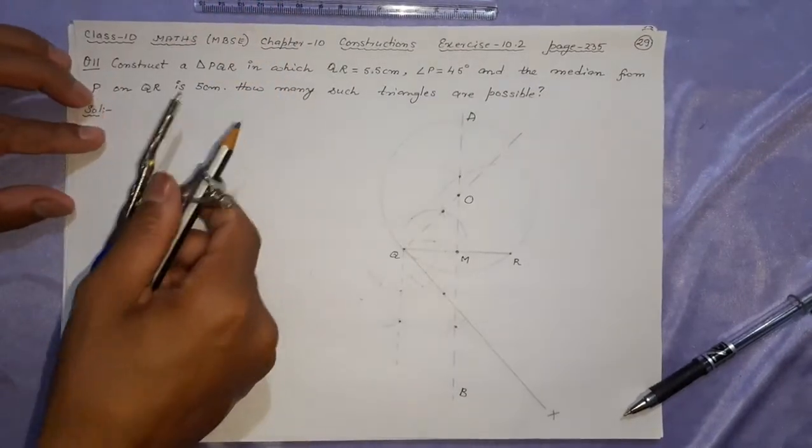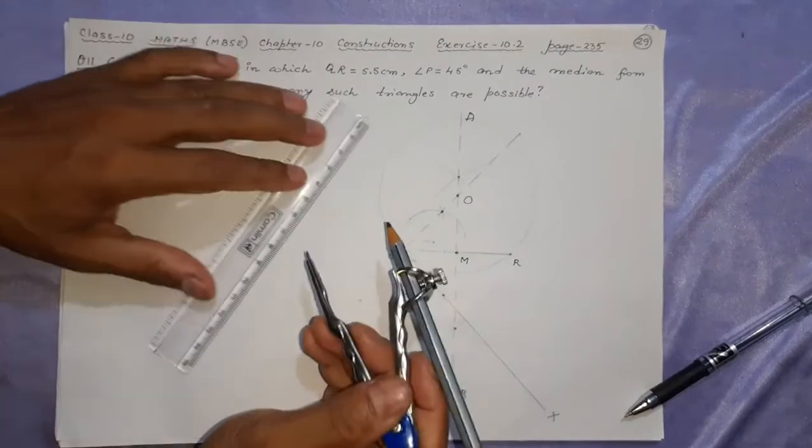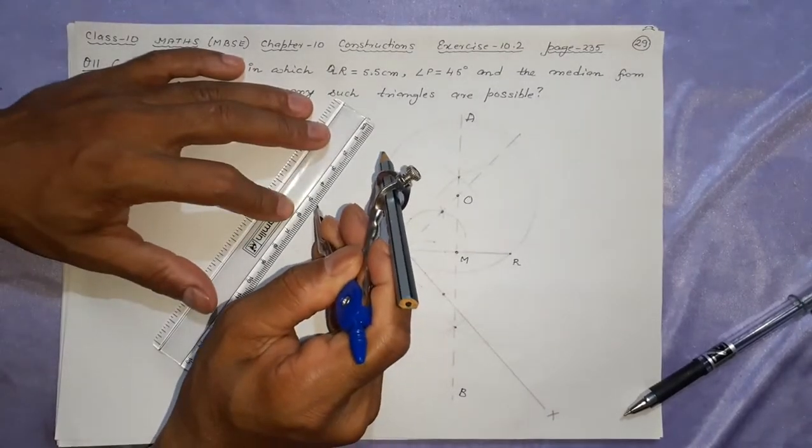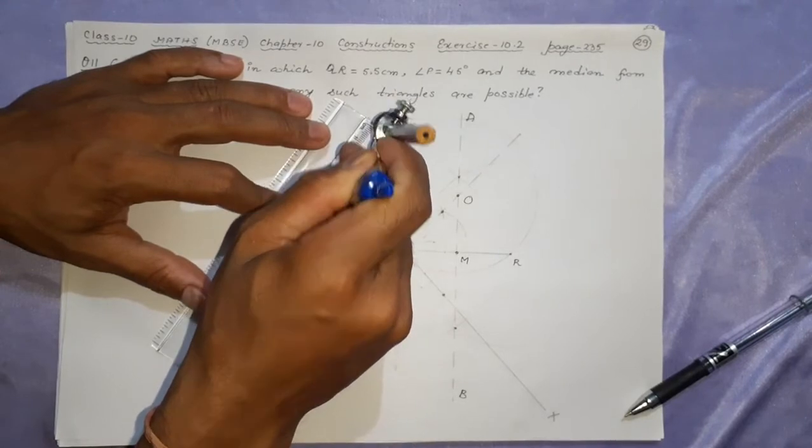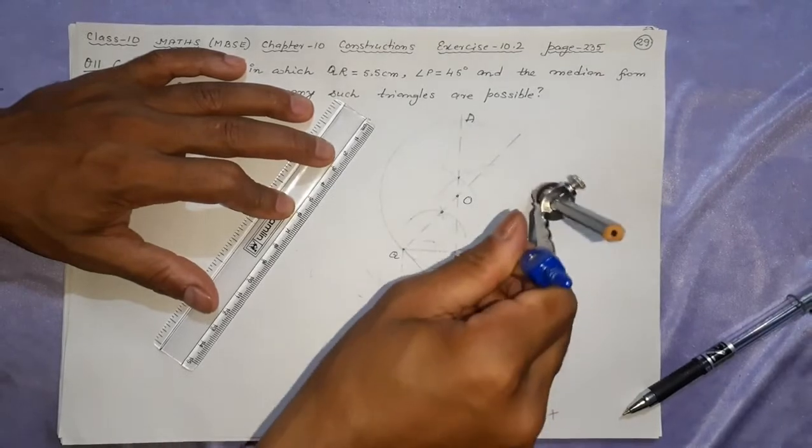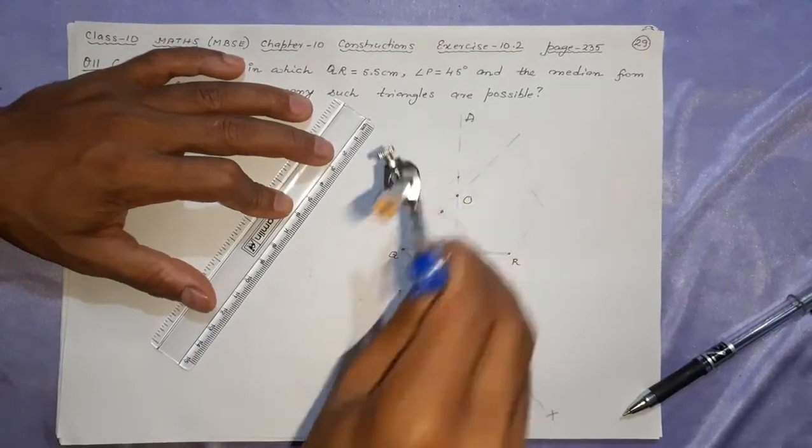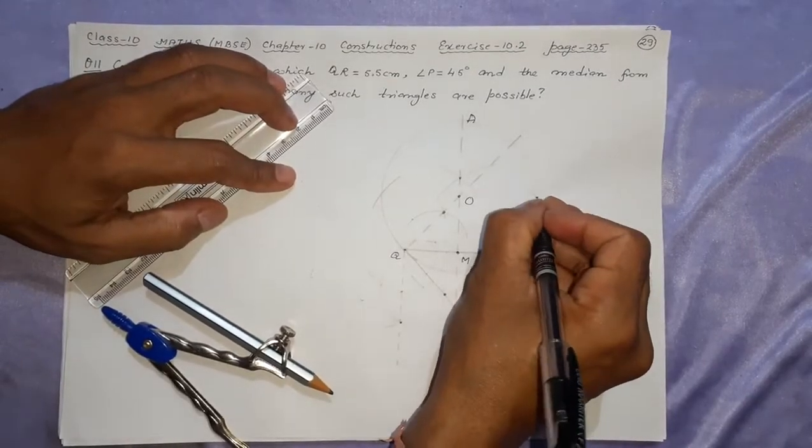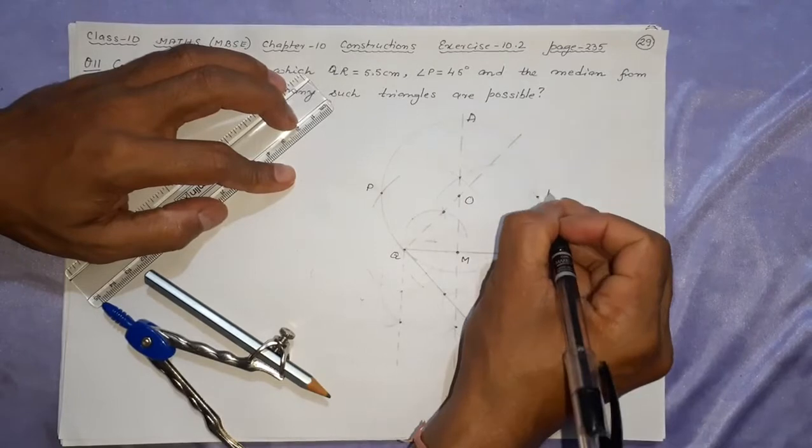Now after that, what is the median size? Only 5 centimeters. From M you have to take that 5 centimeters. If you do not understand, you can revisit the video again and again, but I am doing a little fast because we have already done many times. Cut here and cut here. These are called A and A dash. Here it will be P and P dash.